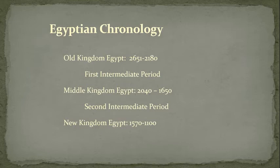The Egyptians noted that you had these periods of success — these kingdoms — and then they would be followed by intermediate periods, which is kind of when everything went to hell. And then things would be back again. Egyptian chronology is roughly broken down into these periods with these dates.